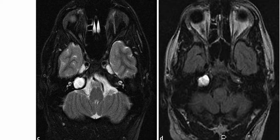On the FLAIR sequence, the lesion is also hyperintense. This lesion did not enhance on the post-contrast sequence (not shown). The lesion is hyperintense on T1, T2, and FLAIR sequences. The key finding is a petrous apex mass that is hyperintense on T1, T2, and FLAIR, and the diagnosis is cholesterol granuloma.